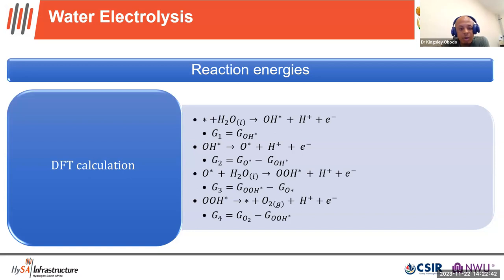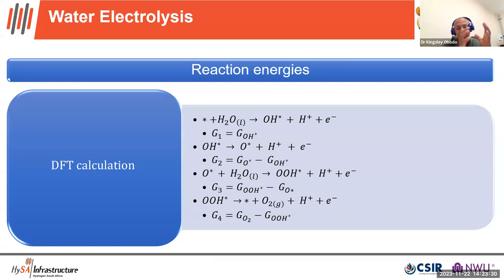The overpotential can be found by taking the maximum of the Gibbs free energy steps: G1 equals G_OH*, G2 equals G_O* minus G_OH*, G3 equals G_OOH* minus G_O*, and G4 equals G_O₂ minus G_OOH*. The water splitting reaction is a four-electron step, and this is the limiting step because the oxygen part of the reaction is very slow compared to the hydrogen evolution reaction.